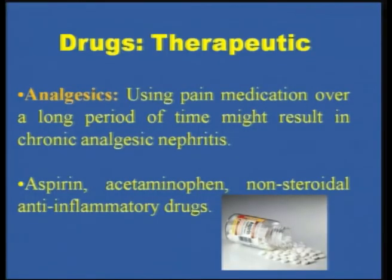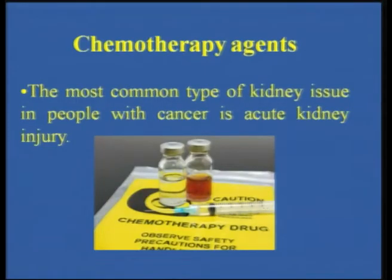Drugs can be certain toxicants. Analgesics — that is why we always say you should never take painkillers for a long time. Using pain medications for a long time can have a negative impact on the kidneys and result in chronic analgesic nephritis. Drugs which have caused kidney damage include aspirin, acetaminophen, and non-steroidal anti-inflammatory drugs. Chemotherapy agents — both radiation and chemotherapy drugs such as cisplatin — can have a negative effect on the kidney. The common type of kidney issue in people with cancer is acute kidney injury. Chemotherapy agents therefore need to be carefully designed and used to avoid long-term renal failure.